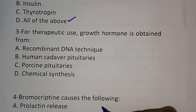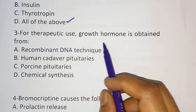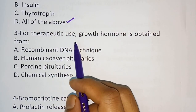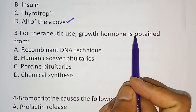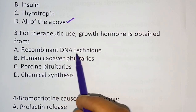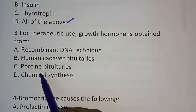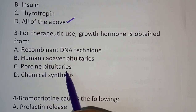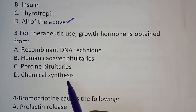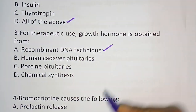Question number three: For therapeutic use, growth hormone is obtained from — options include pituitary, chemical synthesis, or recombinant DNA technique. The correct answer is recombinant DNA technique.